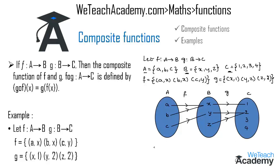The composite function g∘f is a mapping from A to C. The ordered pairs of g∘f are (a, 1), (b, 1), and (c, 2).